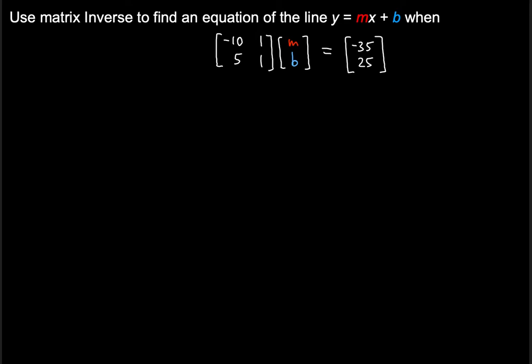We need to use a matrix inverse in order to find the equation of the line in the form of y equals mx plus b when the given product of matrices is equal to the resulting matrix here on the right side. This is a linear function, y equals mx plus b.